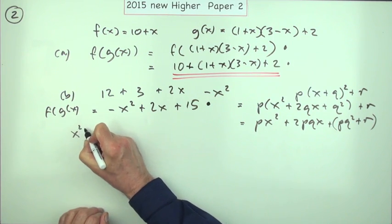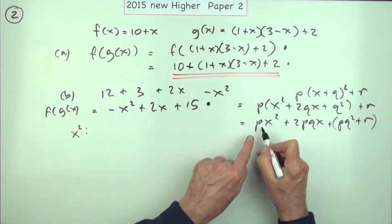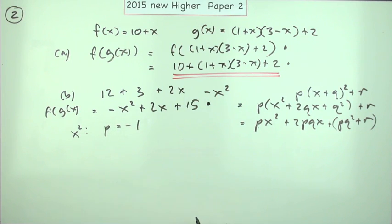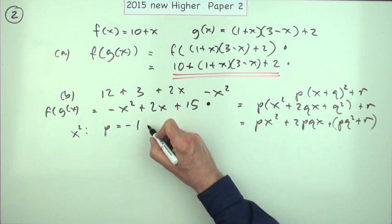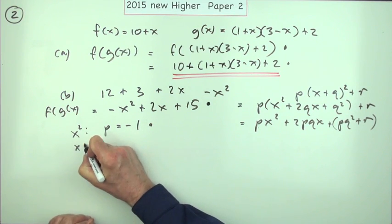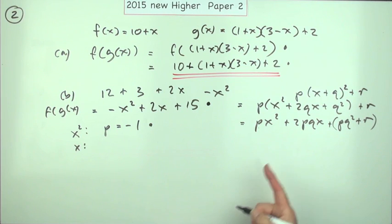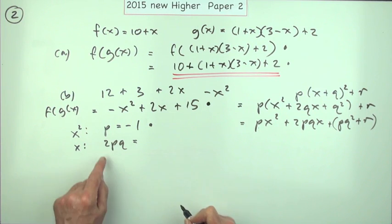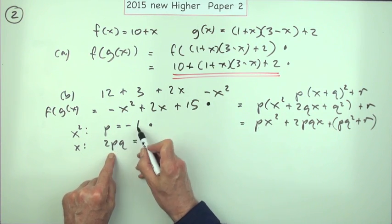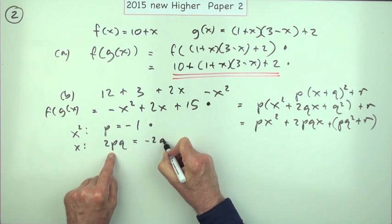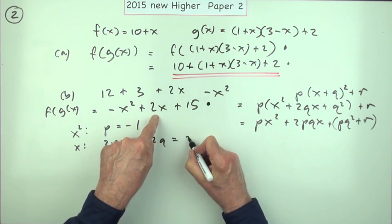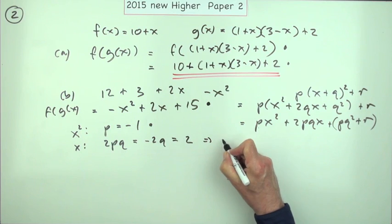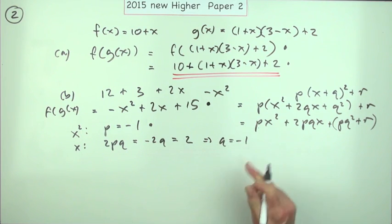Now you can compare them term for term because they're meant to be the same. So term for term, that would be comparing the x² terms. This says p, this says negative one, so straight away p equals negative one. Now doing it that way, that was the first mark. Now the x terms: that says 2pq. 2pq are now known to be, since p is negative one, that's -2q, should equal 2. Q should equal 2, x term, x term, which means that q is also negative one. It's not a mark.